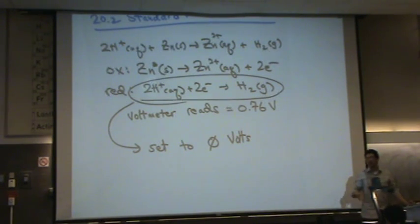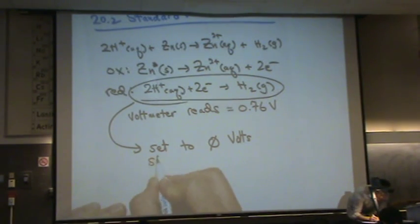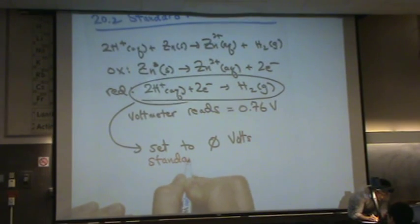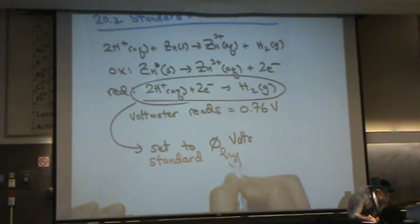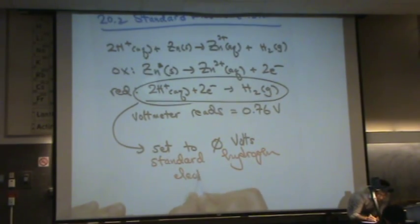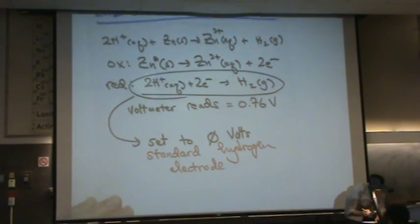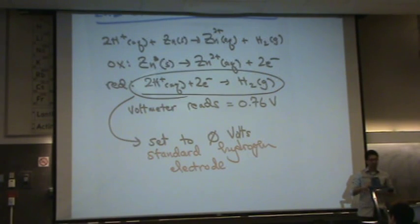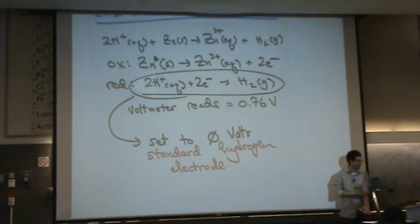And that's going to be our standard of potential. In fact, we call this the standard hydrogen electrode. So that's our standard hydrogen electrode, also known as the zero voltage. Everything else is measured from this or according to this.